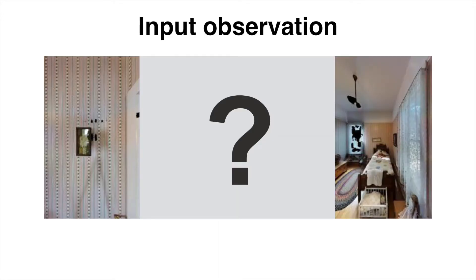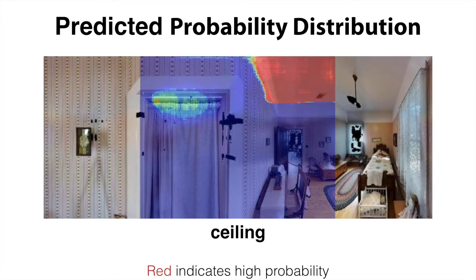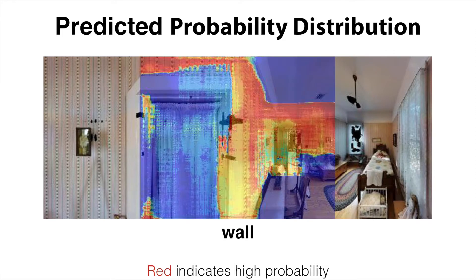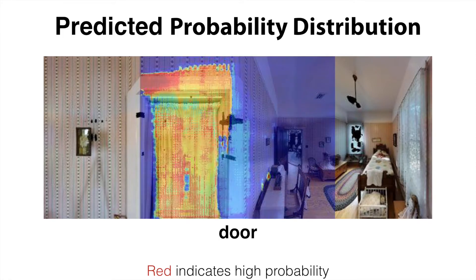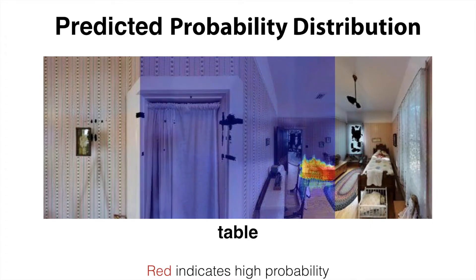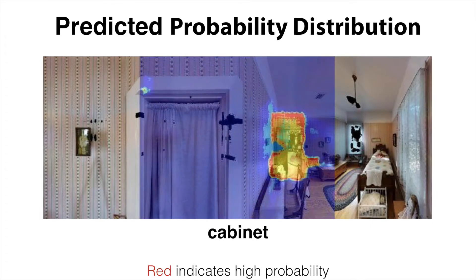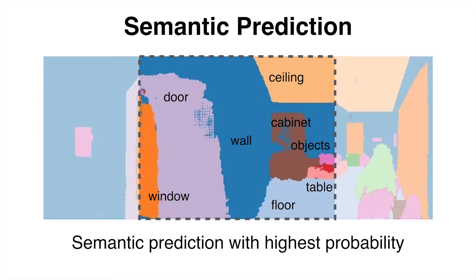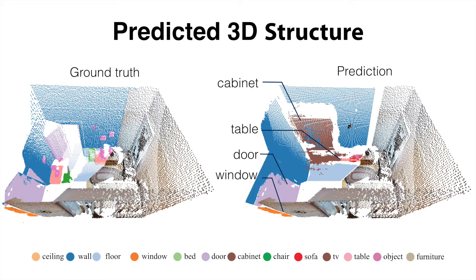This is the input observation with a missing region. Here is the predicted probability distribution of ceiling, visualized as a heat map overlaid on top of the ground truth color image. And for floor, for wall, door, window, table, cabinet, and chair. Note how the network is uncertain about the potential locations of chairs. Here we show a semantic map generated from the labels with the highest probabilities per pixel. Here we visualize the 3D structure predicted from our network in 3D space and the ground truth.